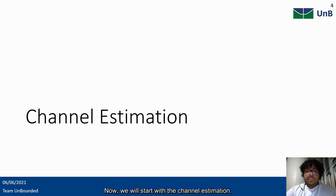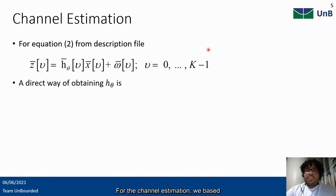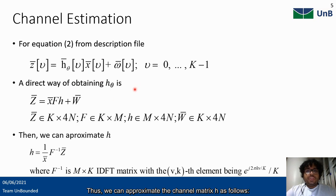Now we will start with channel estimation. We based our development on equation 2 from the description file, where the signal received in the frequency domain is a result of the transmitted signal elementwise multiplied with the channel plus the noise. We can approximate the channel matrix H as follows: we inverted the Fourier operation and divided the result by the transmitted signal, which is equal for all subcarriers.